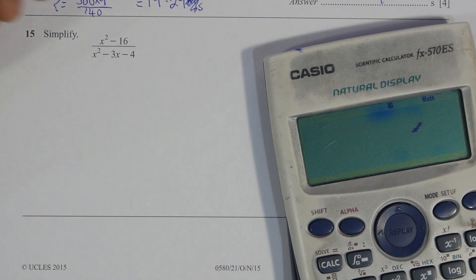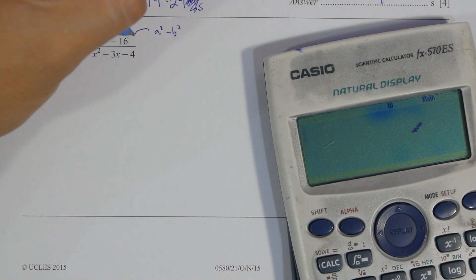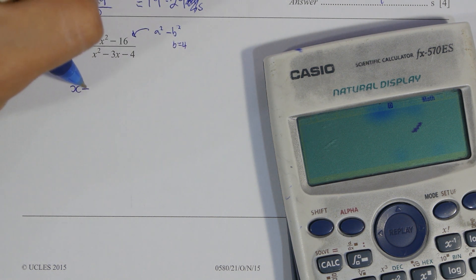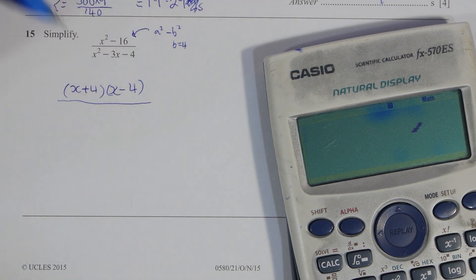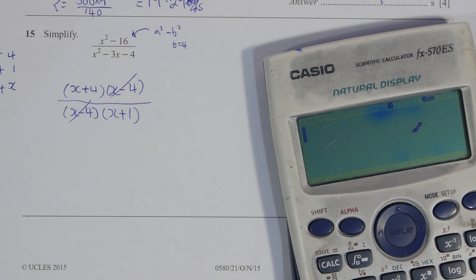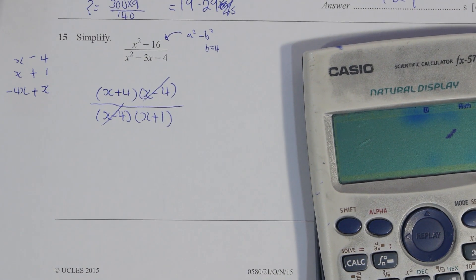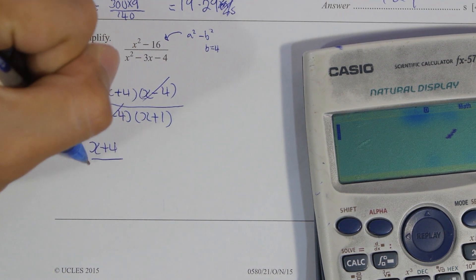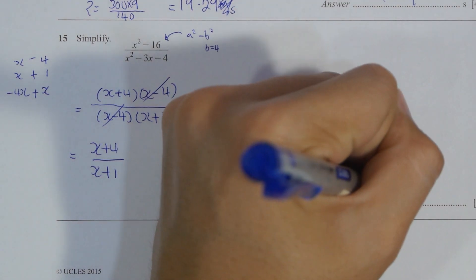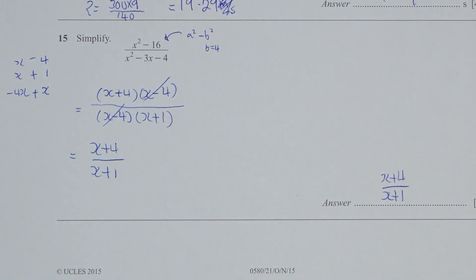For question 15, X squared minus 16 uses the A squared minus B squared formula. The numerator will be equivalent to (X + 4)(X − 4). For the denominator, use the cross multiplication method — the result is (X − 4)(X + 1). Cross off the (X − 4), and the final answer is (X + 4) over (X + 1).